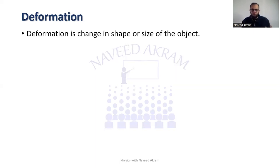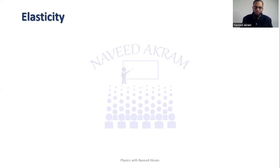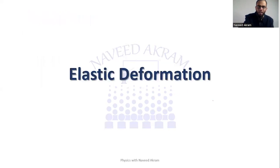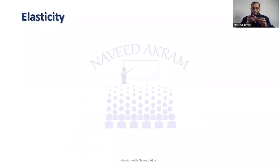Similarly, if you have a spring and you apply a force outward, it will be extended — its length will increase — and we say that it is deformed. Now, for an elastic material like a spring, when you extend it its length increases, but when you stop applying that force and release it, it regains its original position. This behavior is known as elasticity.